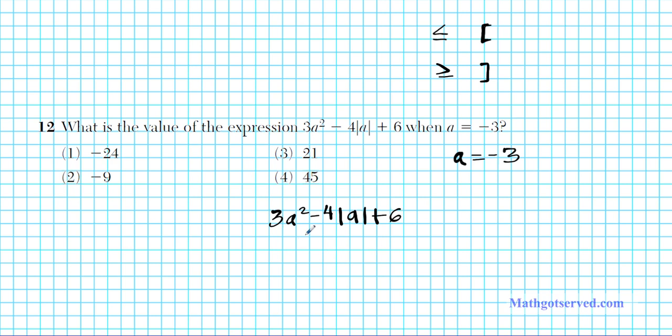Now what we have here, we're going to substitute negative 3 into a, so we're going to have 3 times negative 3 raised to the second power, minus 4 times the absolute value of negative 3, and then you add 6 to the result.